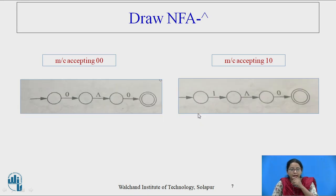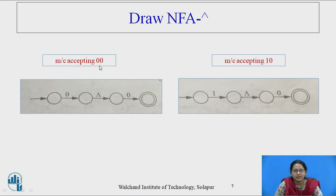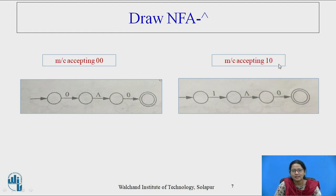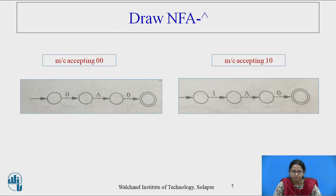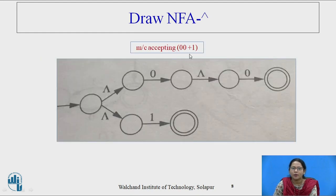Now it is time to draw the machine accepting 00 — concatenation. The final state of the first 0 is connected to the initial state of the second 0, and only the final state of the second 0 remains as a final state. For machine accepting 10: the final state of 1 is connected to the initial state of 0, so the final state of 0 is the only final state.